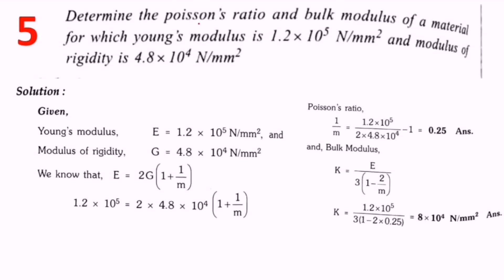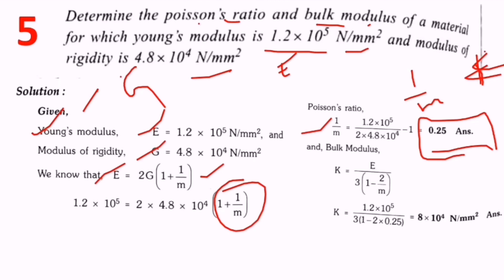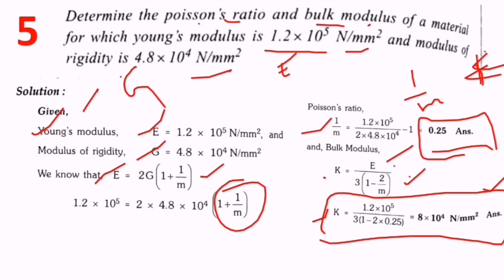Fifth question: Determine the Poisson's ratio and bulk modulus for a material where E = 1.2 × 10⁵ N/mm² and modulus of rigidity G = 4.18 × 10⁴ N/mm². Using E = 2G(1 + 1/M): solve to get 1/M = 0.25. That is Poisson's ratio. Then substituting in E = 3K(1 − 2/M): K = 8 × 10⁴ N/mm². This is the approach — understand the question, identify given values, and substitute into the appropriate relationship between E, K, G, and 1/M.